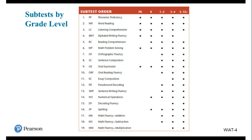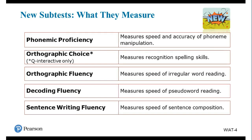Let me tell you what subtests you administer for a child in pre-kindergarten. We assess language — listening comprehension and oral expression — as well as reading with phonemic proficiency and word reading, alphabet writing fluency, and math problem solving — six subtests total. If a child is in third or fourth grade, you would administer all 19 subtests. For fifth through 12th grade and beyond, you administer 18 of the subtests — the one you don't administer is alphabet writing fluency. So the number of subtests you administer will depend on the grade placement.